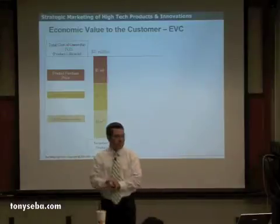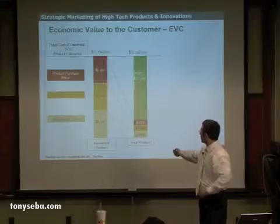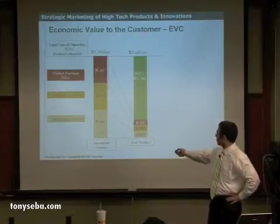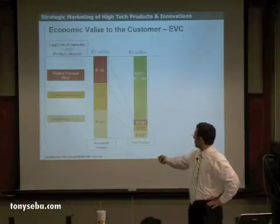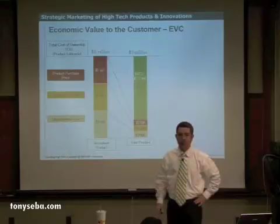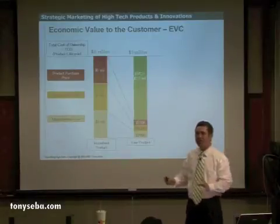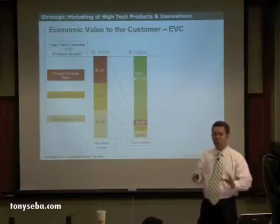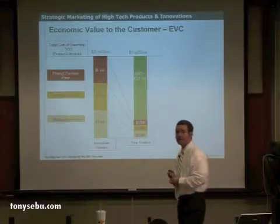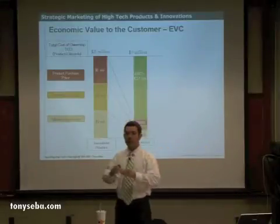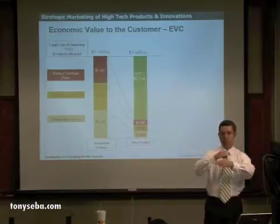So if you save 90%, maintenance drops from $1 million down to $100K, and development from $1 million to $100K. Now assume your cost is $100K — you probably shouldn't price below cost, generally speaking. The economic value that you could add to that customer, if you price at cost as a minimum, would be $2.7 million.